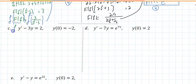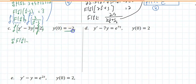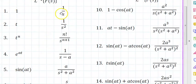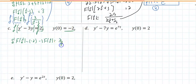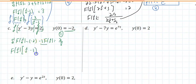Applying the Laplace transform to the next problem: the Laplace on y prime is s times F of s minus a negative 2, minus 3 F of s, equaling the Laplace applied on 2, which is 2 over s — by entry 1. Factoring F of s out gives an s minus 3, and moving the 2 to the right it becomes plus 2.